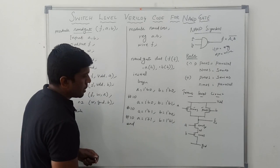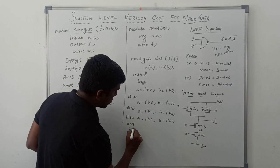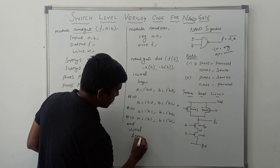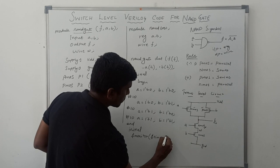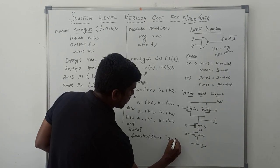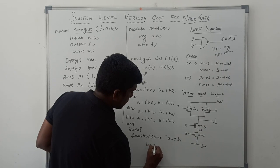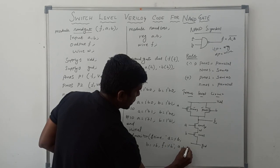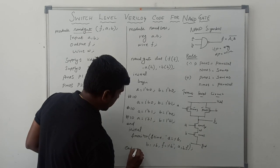Then, end. Now, I am going to verify the result using the monitor statement. Initial, dollar monitor, dollar time, A equal to percentage B, B equal to percentage B, F equal to percentage B, A comma B comma F. Finally, close the module, end module.